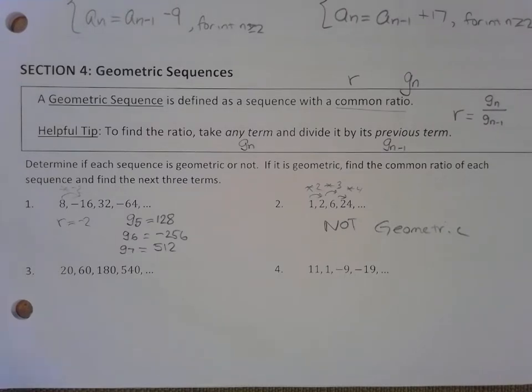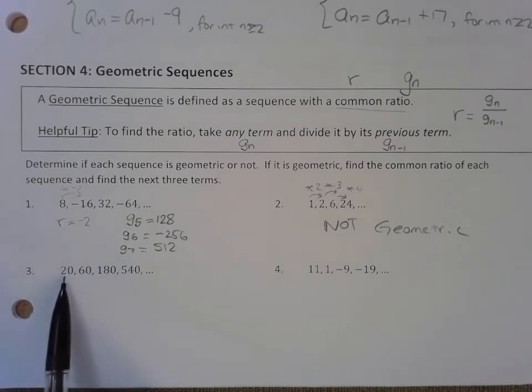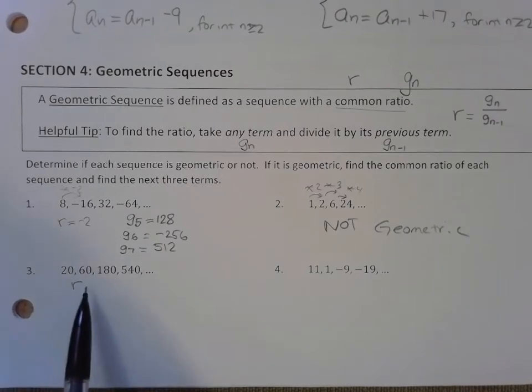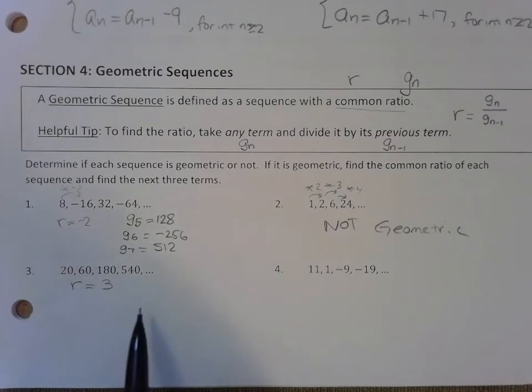So for number 3, I do think this is a geometric sequence. I think that if I take any term divided by the previous term, I get a constant ratio. That ratio value is 3.